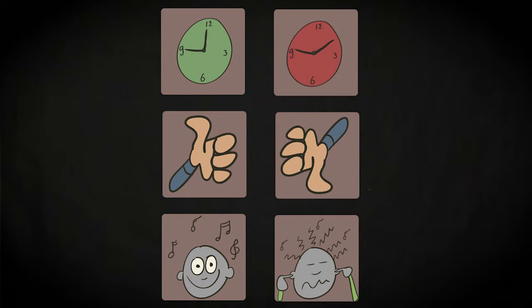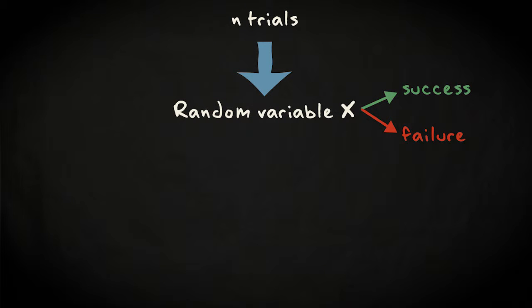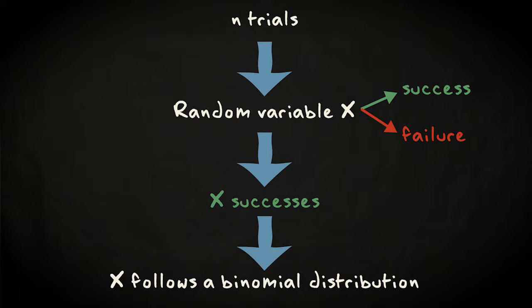When you collect a given number of observations on such phenomena or trials, the number of cases where you get one of the two outcomes, the number of successes, often follows a binomial distribution. For example, you could consider how many out of 25 participants in a meeting are late or how many of 10 voters vote against the proposal.